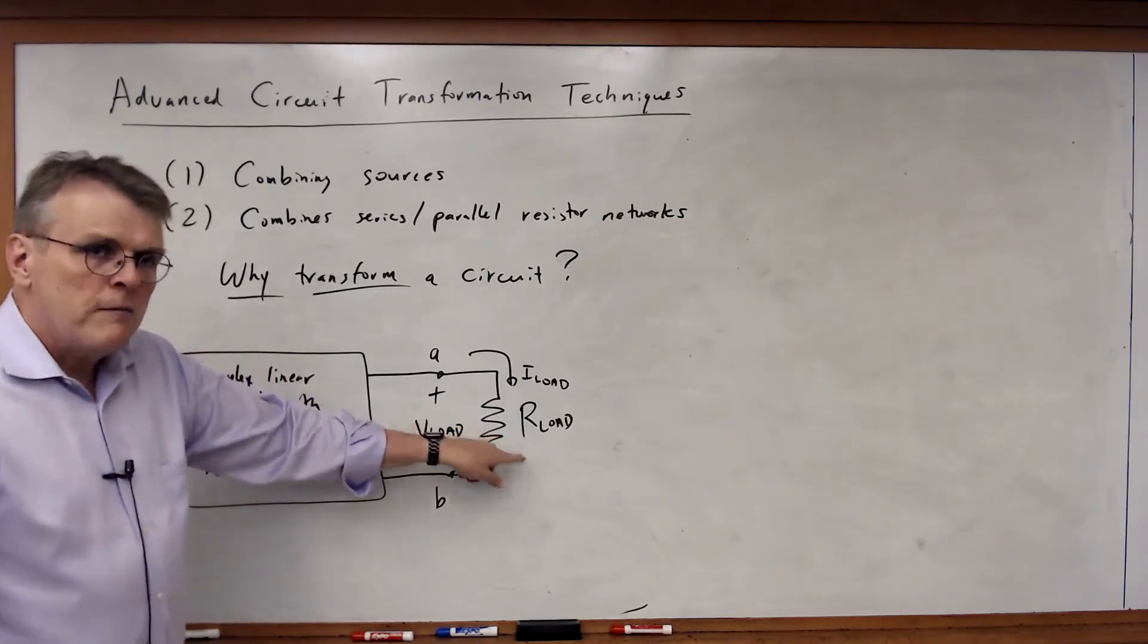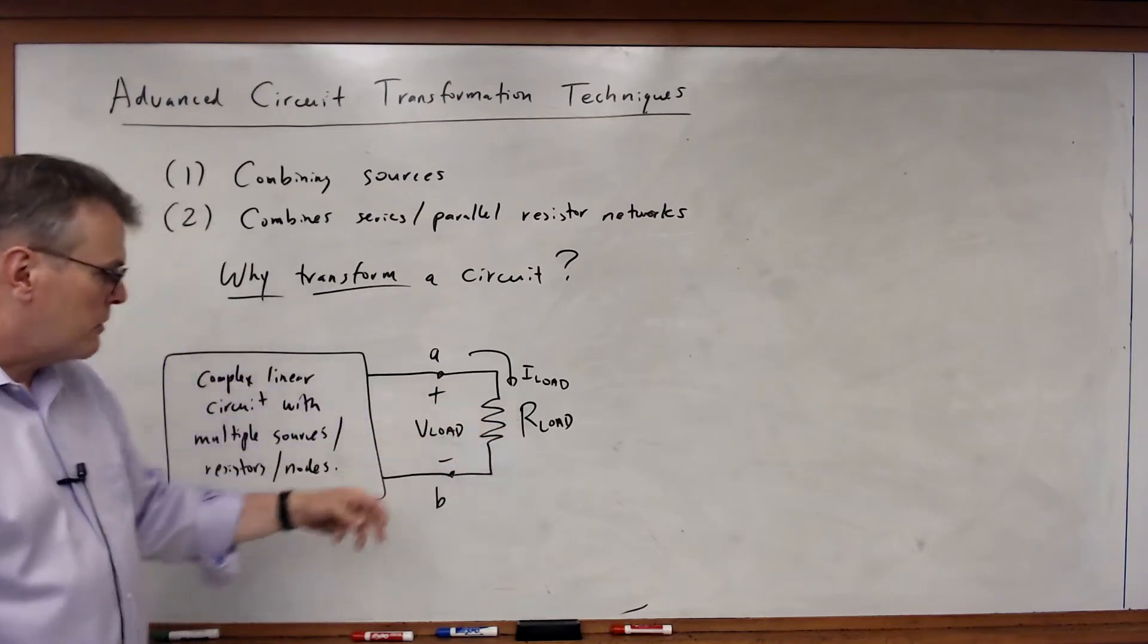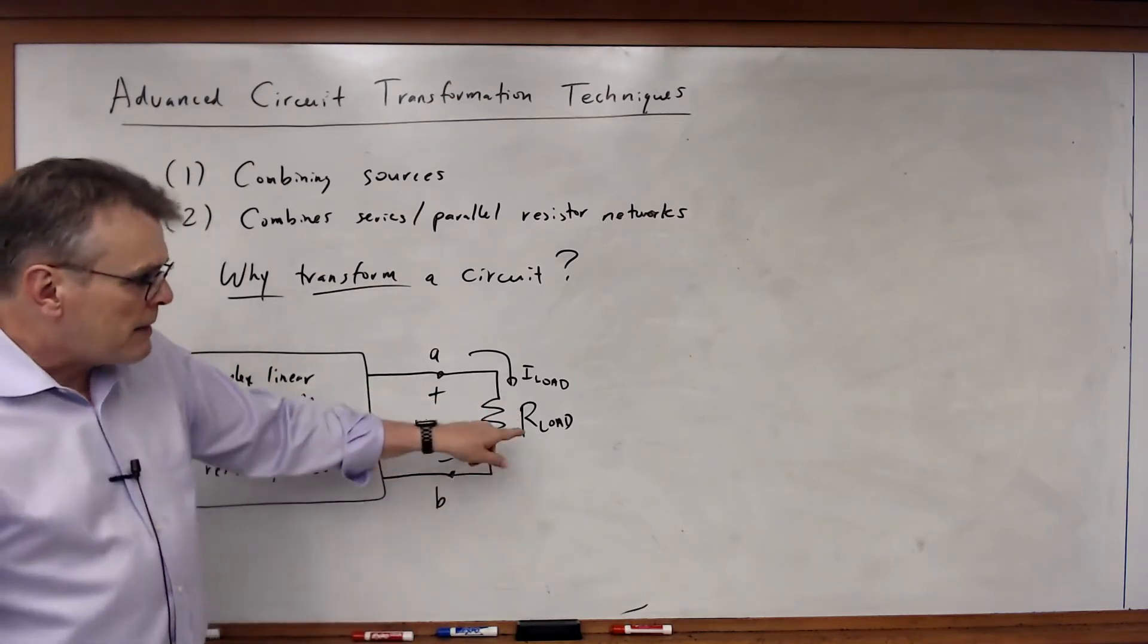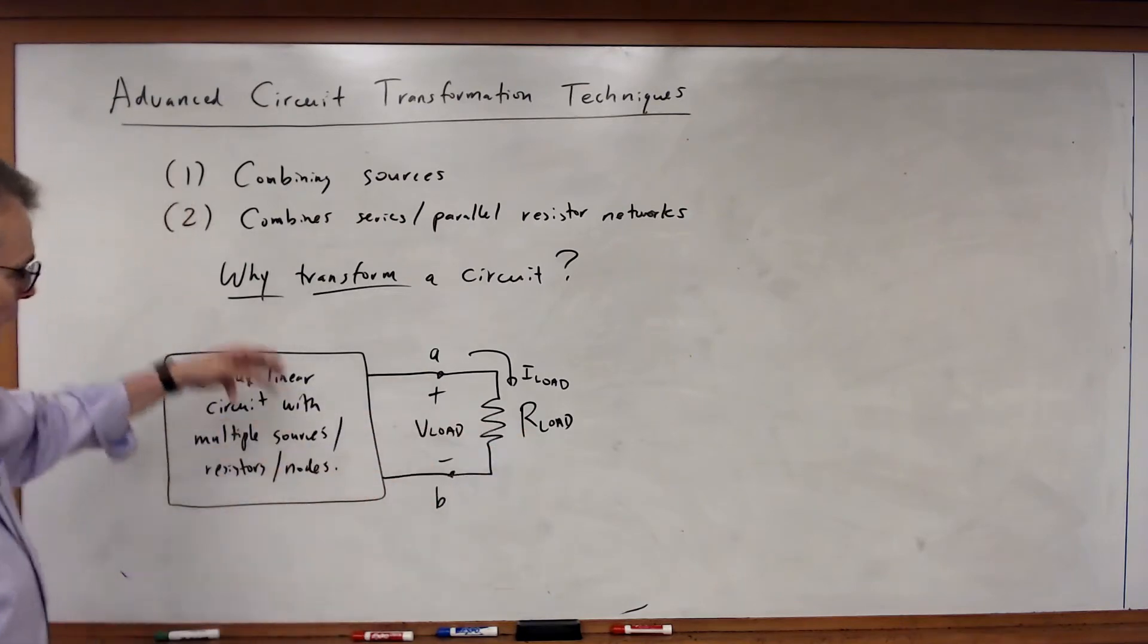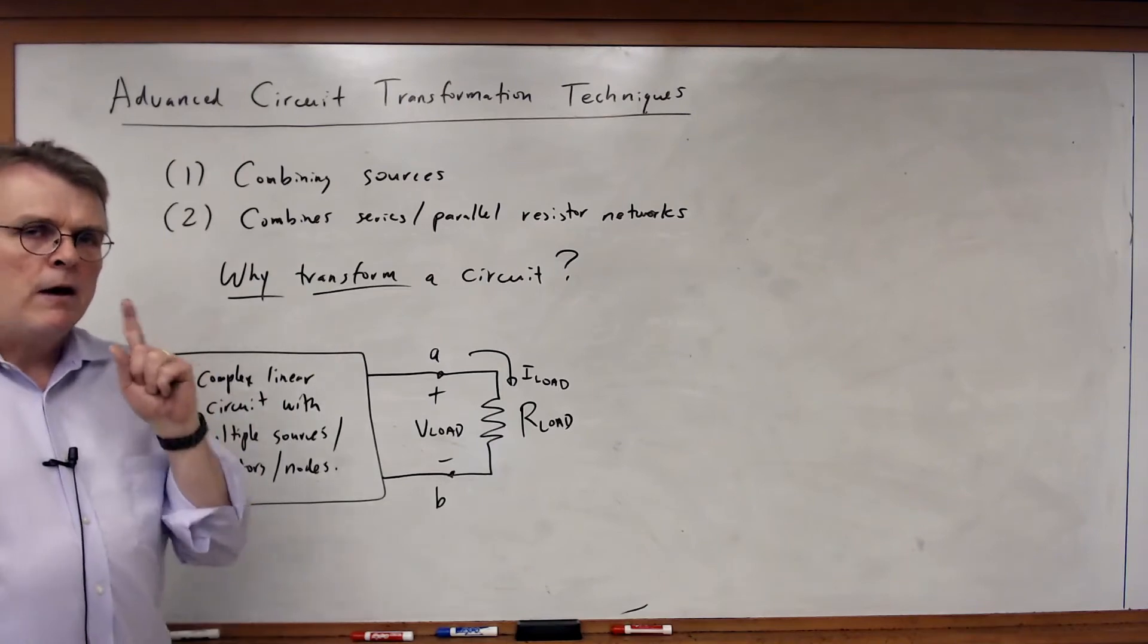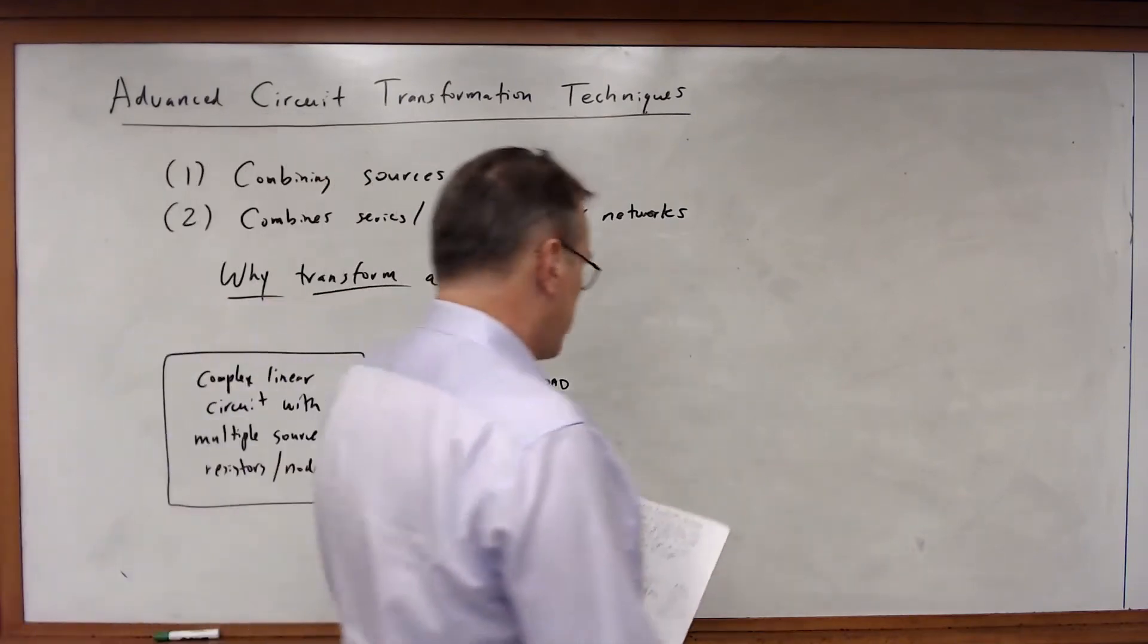Get the answer, put in the next load resistor, do all the calculations, get the answer and so forth. So every time I change the value of R-load, I have to recalculate everything in the circuit. As it turns out, there is a simpler way.